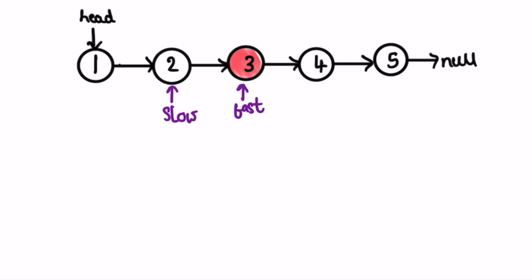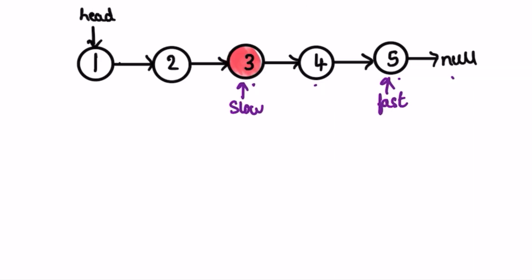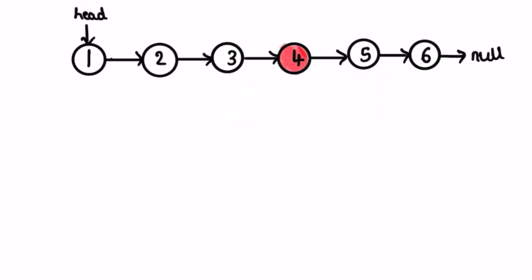In the next iteration, we check if fast is not null and fast.next is not null — both true, so we continue. Slow moves to the next node and fast moves to fast.next.next, reaching the end. In the third iteration, fast is not null but fast.next is pointing to null, so we end the loop and return whatever slow is pointing to. Slow is pointing to node three, which is the expected answer.